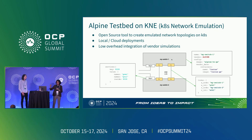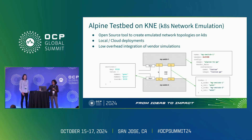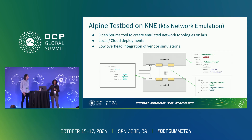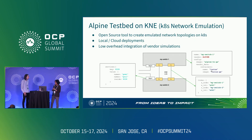Here you can see a simple Alpine testbed with two virtual switches connected using KNE links. Each gray box is the Alpine virtual switch. The definition of these virtual switches is specified in the protobuf file, where we mention what images run in each container. The links between virtual switches become the data ports, and we enable certain services on the management port. The Alpine VS has two images: the switch stack image and the vendor data plane container, which is our default data plane implementation.